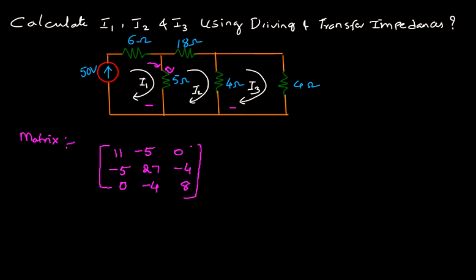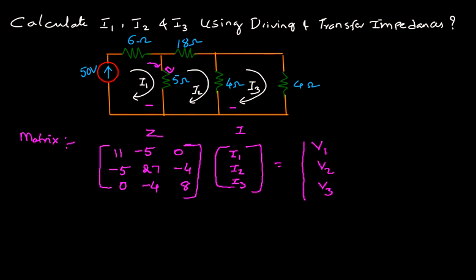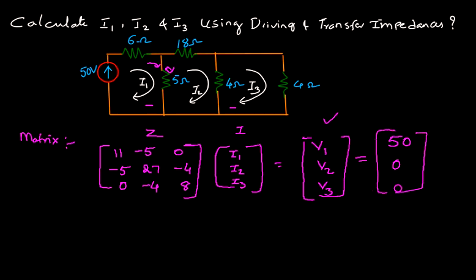The matrix is now complete. Multiplying this matrix by the respective currents I1, I2, and I3 gives us the impedance matrix Z multiplied by current matrix I, which equals the voltage matrix V — with V1, V2, and V3. For the first loop the voltage is 50, and for the second and third loops the voltage is 0.